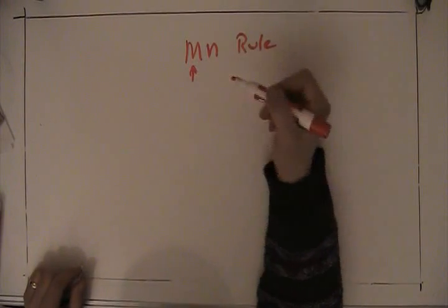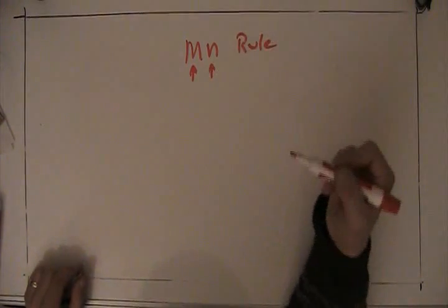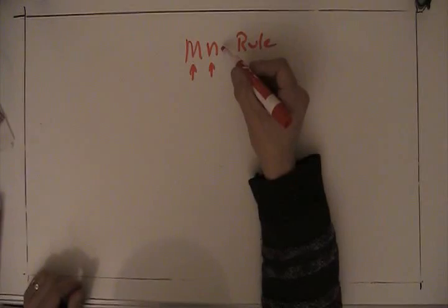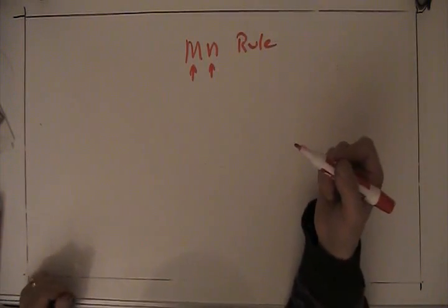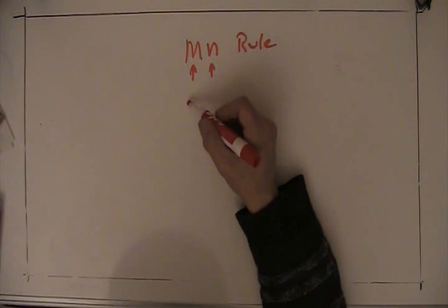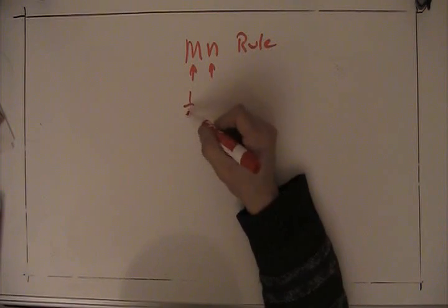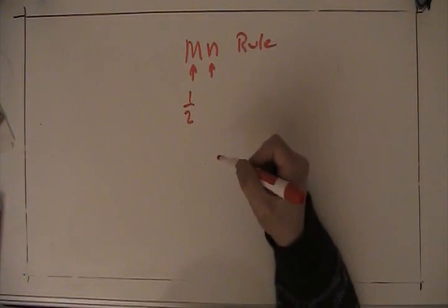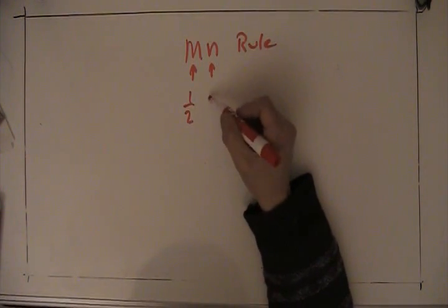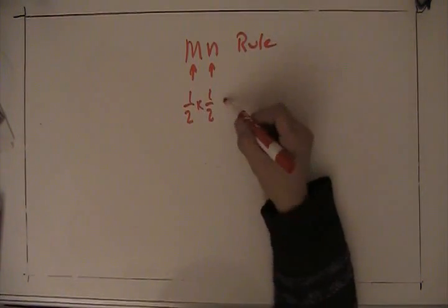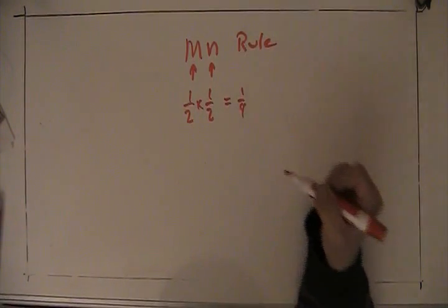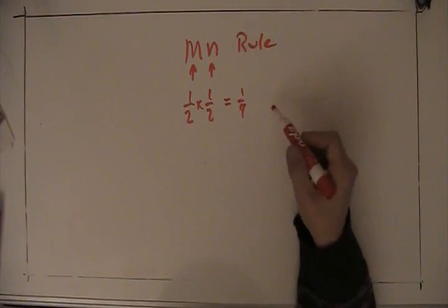MN rule: M is the first probability, N is the second probability. There could be a third one—O, MNO, MNOP, Q—as many as you like. For coin toss, probability of heads for the first toss was one-half, so M is one-half. N was also one-half. So there was our probability of two heads in a row, or two tails in a row.